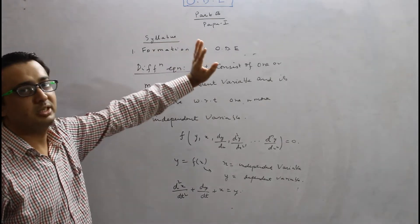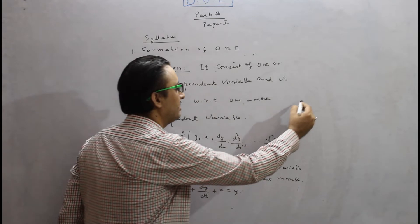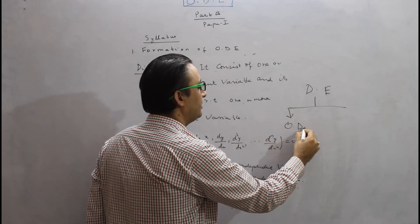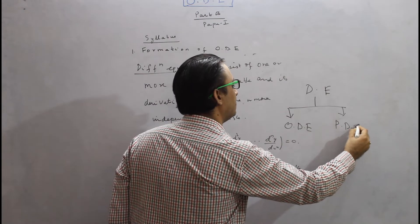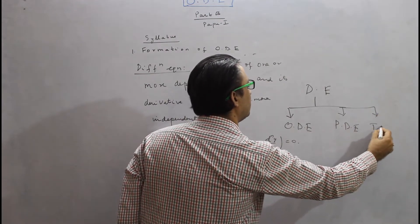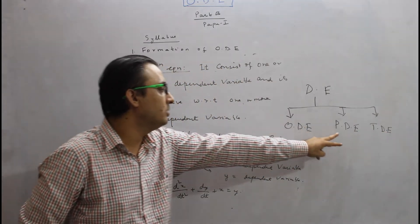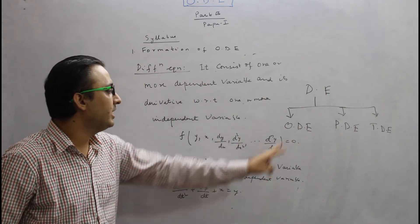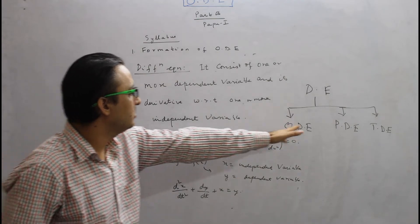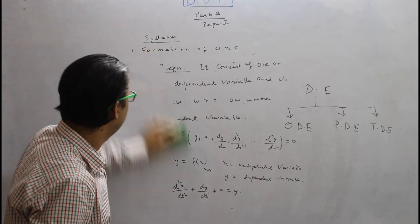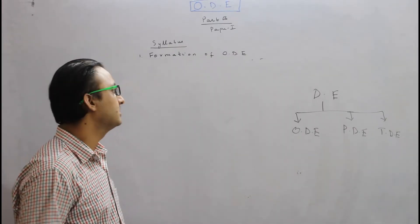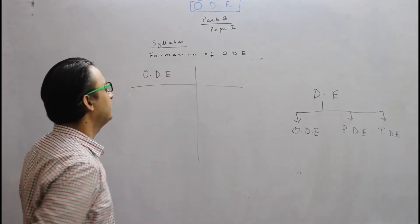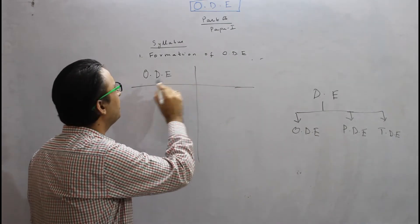Now we are going to study ordinary differential equations. Differential equations are bifurcated into ordinary differential equations, partial differential equations, and sometimes total differential equations, though the last is not in the syllabus. We are primarily dealing with ODE and PDE — ODE is in Paper 1 Part B, and PDE is in Paper 2 Part B. We will now make a parallel differentiation between ODE and PDE.